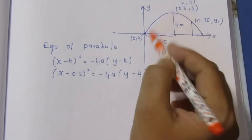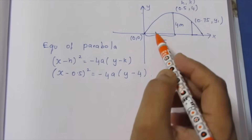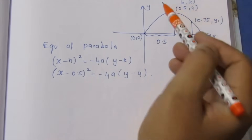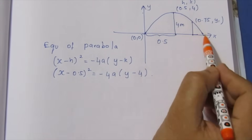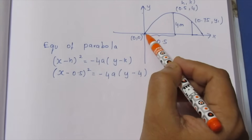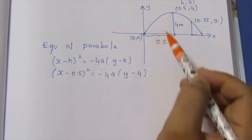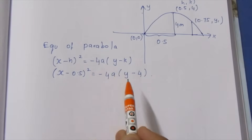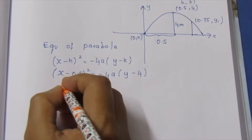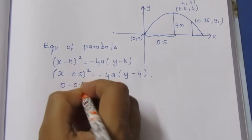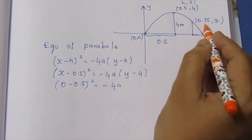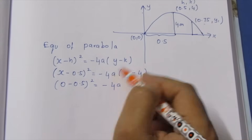Now, with a point on the parabola, we can substitute the point (x, y). If we substitute this, we can substitute all the points. We substitute x = 0 and y = 0 into the equation: 0 minus 0.5, the whole square equal to minus 4a into (0 minus 4).